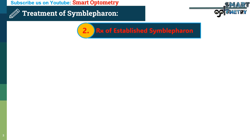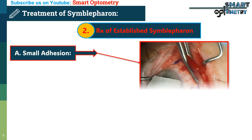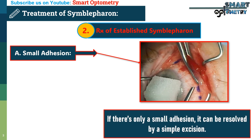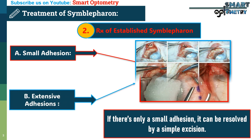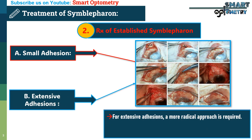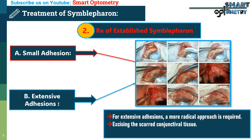2. Treatment of established Symbolpheron: when Symbolpheron is already established, treatment depends on the extent of the adhesions. a. Small adhesion: if there is only a small adhesion, it can be resolved by a simple excision. b. Extensive adhesions: for extensive adhesions, a more radical approach is required. This involves excising the scarred conjunctival tissue and performing a mucous membrane graft to cover the exposed area. The mucous membrane can be sourced from the upper phonics of the opposite eye or the buccal mucosa.